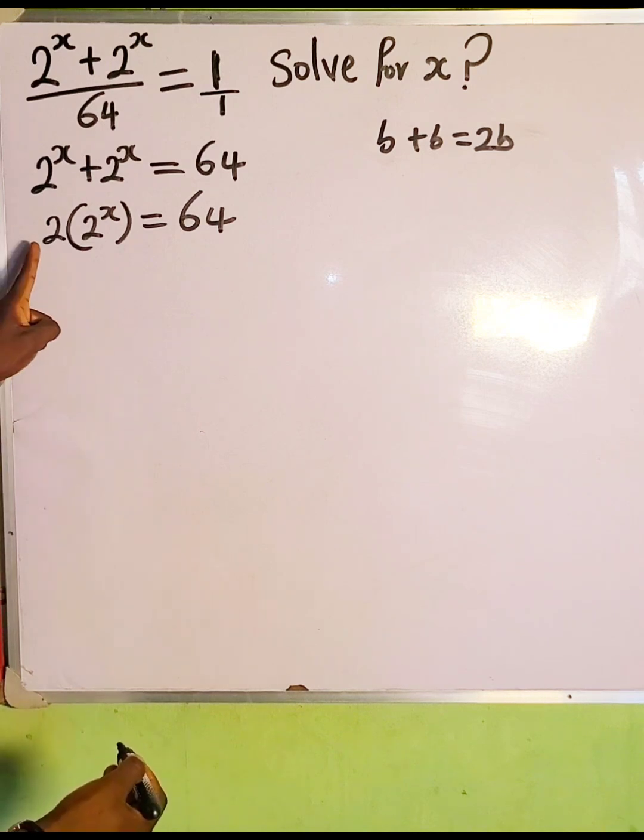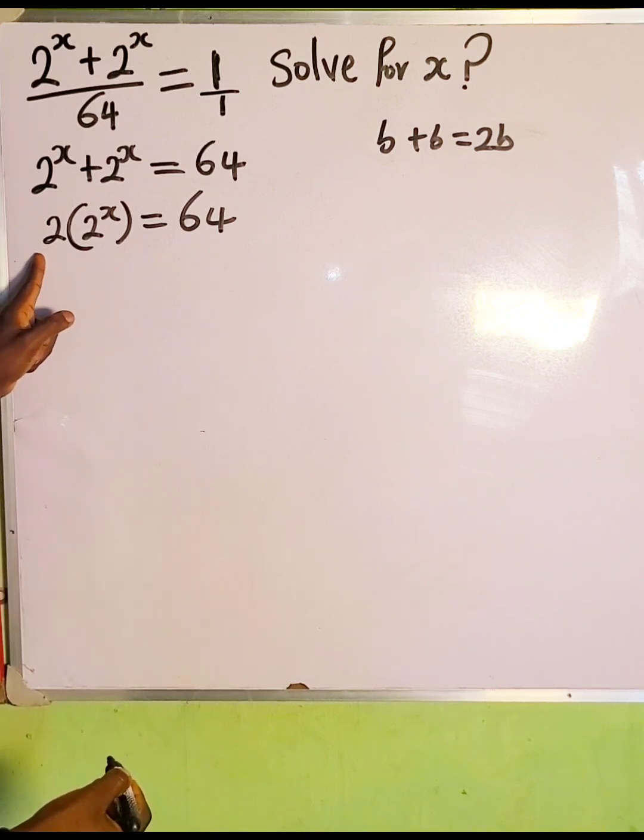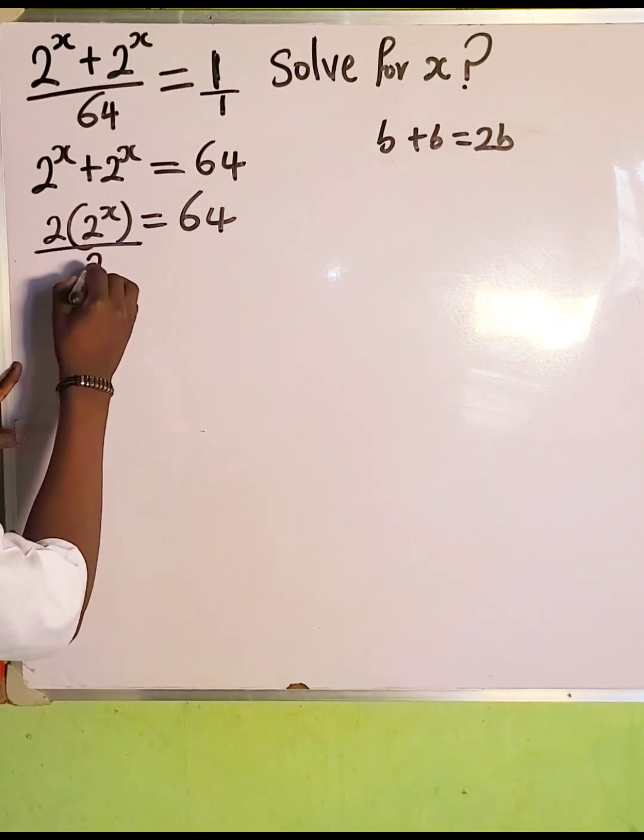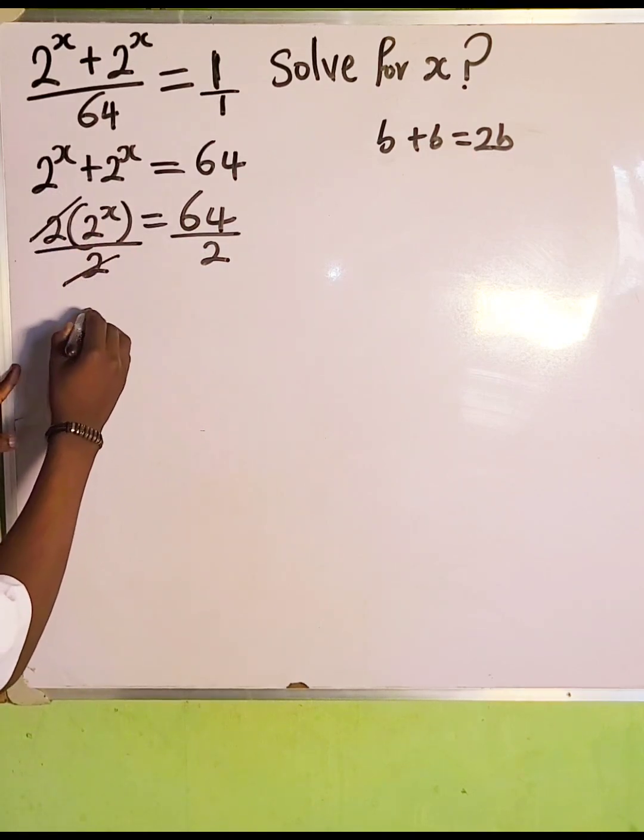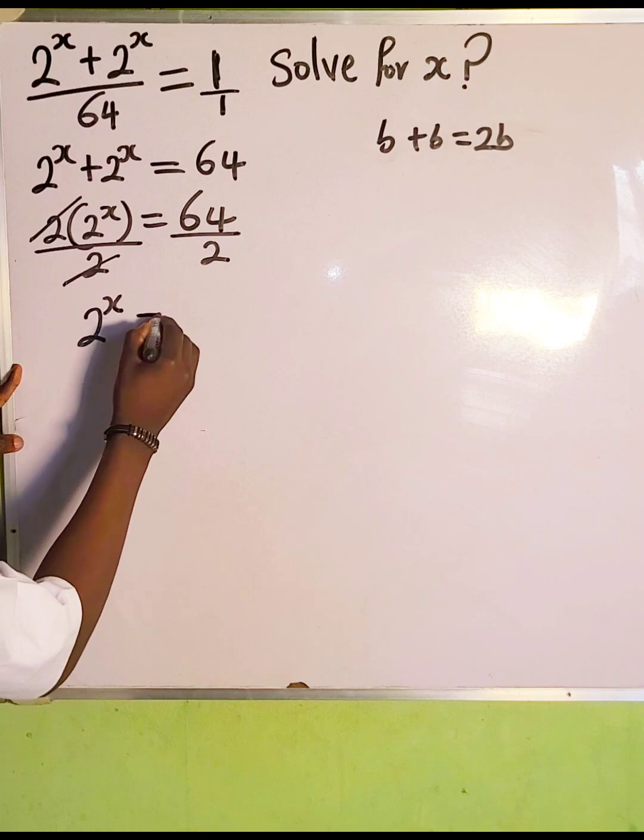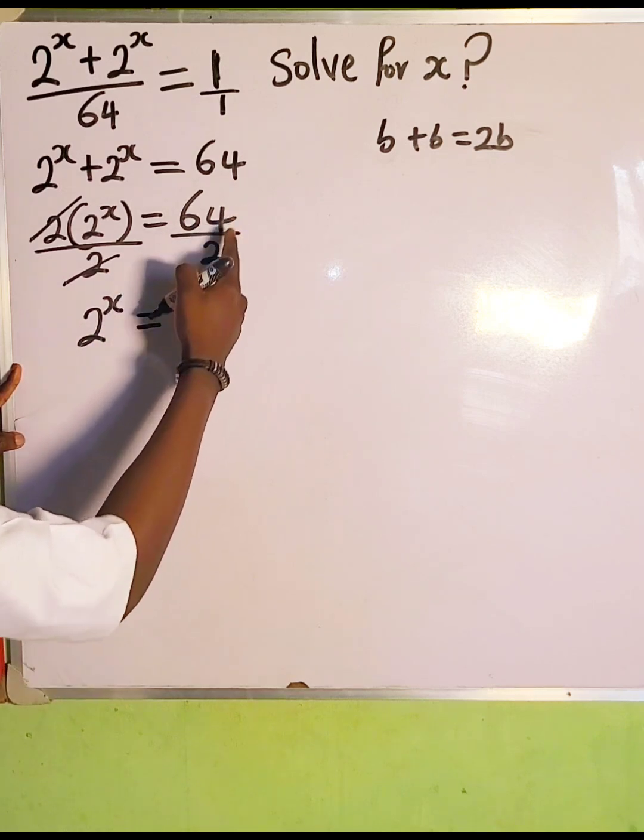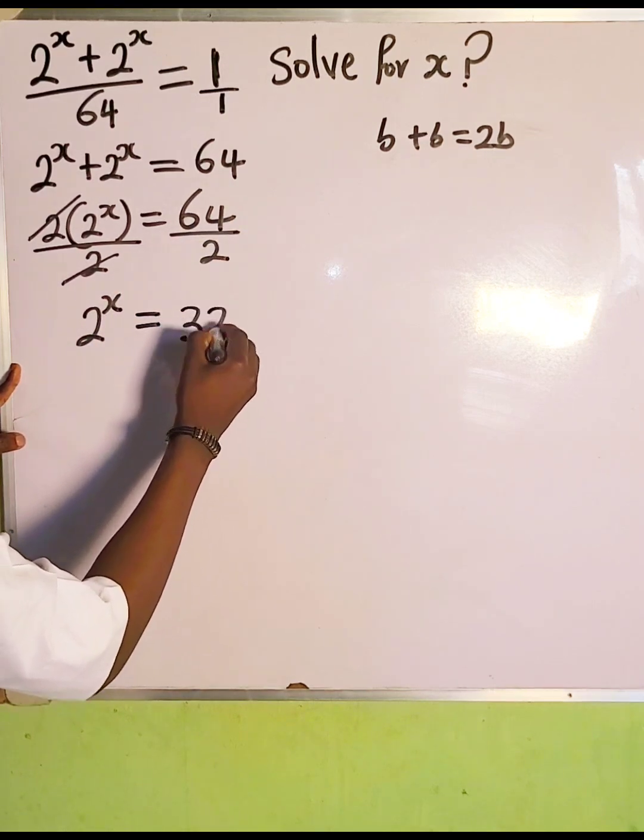Now the next thing we're going to do, we're going to divide both sides by 2 in order to eliminate these 2. So we divide the left hand side by 2, we do the same thing to the right hand side. This 2 is going to cancel these 2. We are left with 2 to the power of x, which is equal to 64 divided by 2, which is going to give us 32.